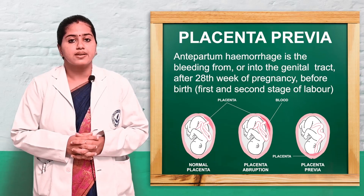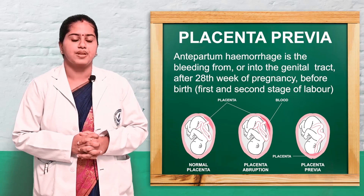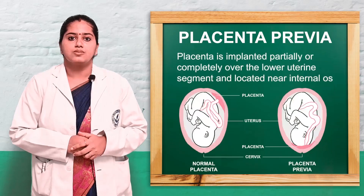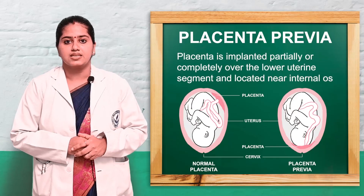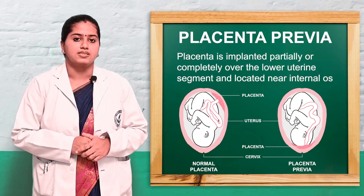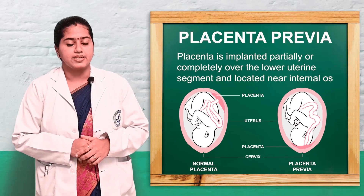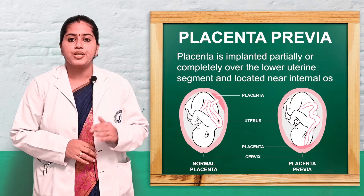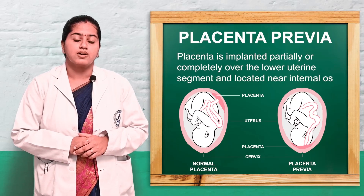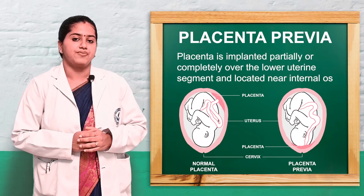Today we will cover the topic of placenta previa. Usually the placenta is implanted in the upper part of the uterine cavity in a normal pregnancy. If the placenta is partially or completely implanted in the lower uterine cavity — that is, it covers or lies near the internal os — then it is known as placenta previa.